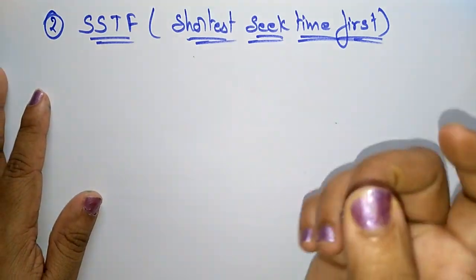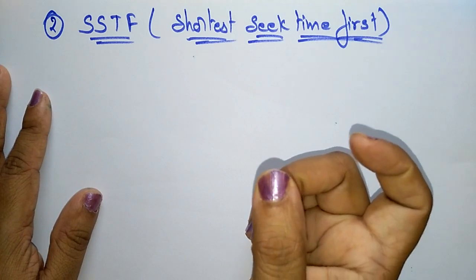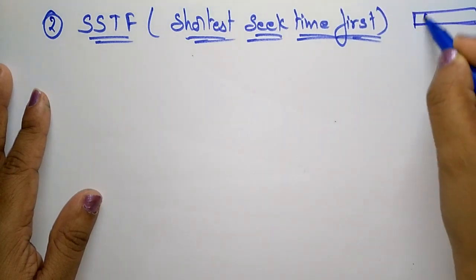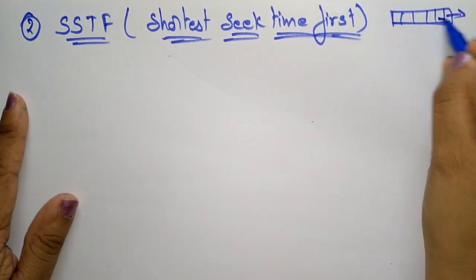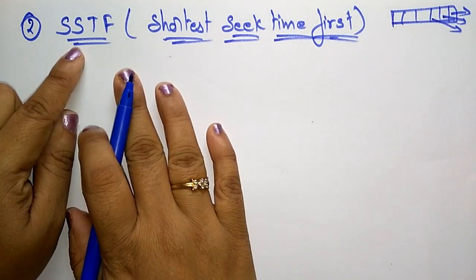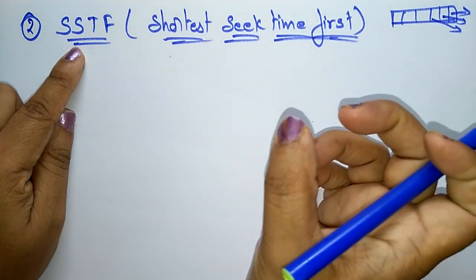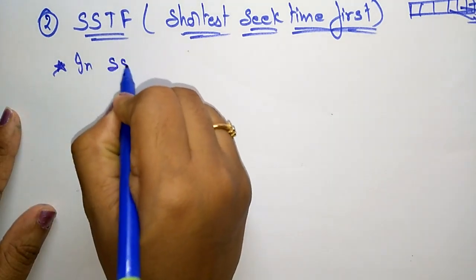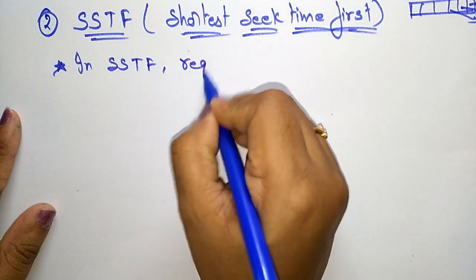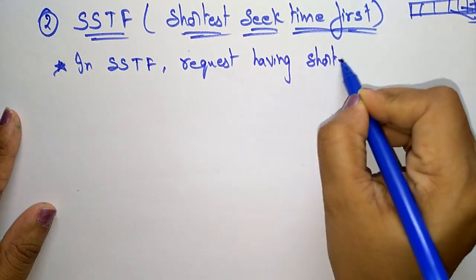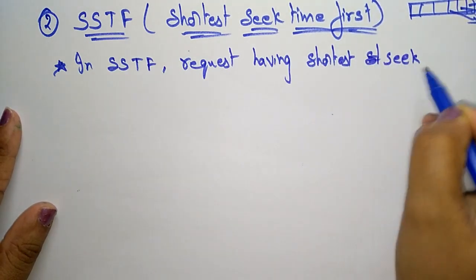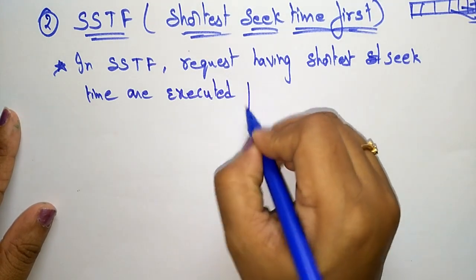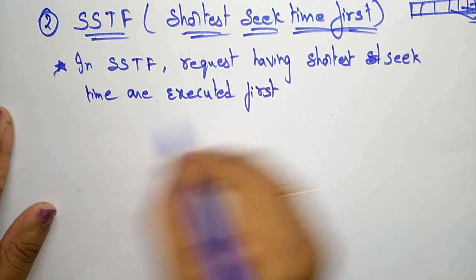The name itself says that we have to take first whatever has the shortest seek time. In First Come First Serve, whatever number is placed first in the queue is taken in sequence. But in SSTF, we have to take whichever track has the shortest seek time — that has to be executed first.